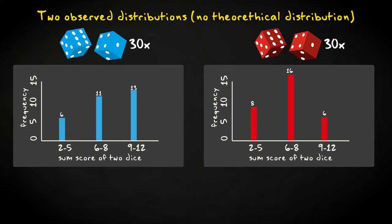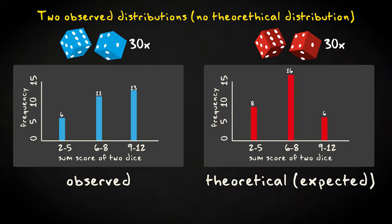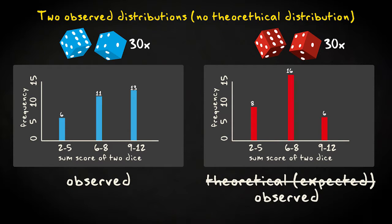Sometimes people then apply the equation of the chi-squared statistics by assuming that one of the two distributions represents the observed distribution and the other the theoretical distribution. But that's wrong. It underestimates the sampling variability which exists for both pairs of dice.